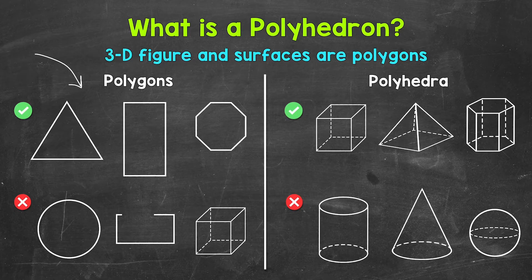Simply put, polygons are flat, closed, and have straight sides. So we have a triangle, a quadrilateral — more specifically a rectangle — and an octagon. All of those are polygons.